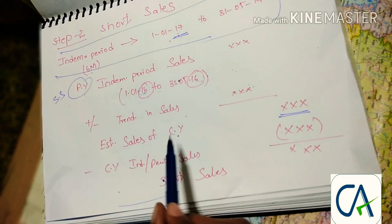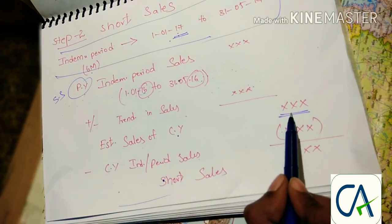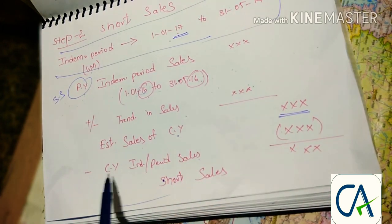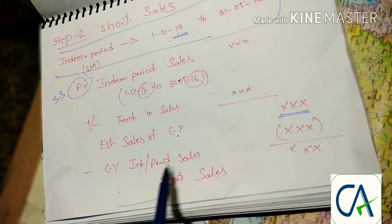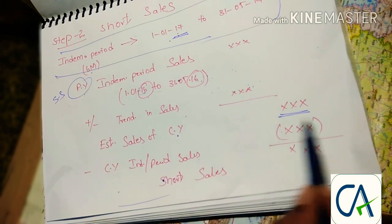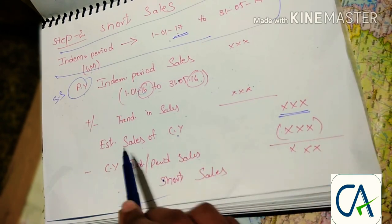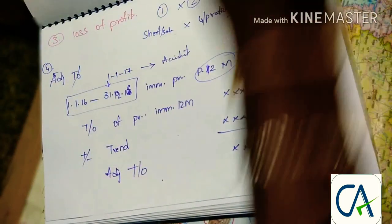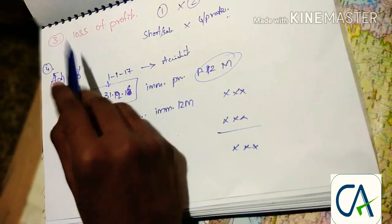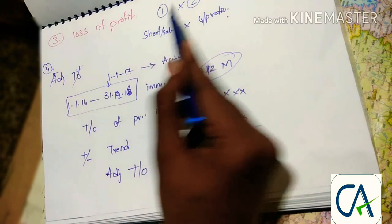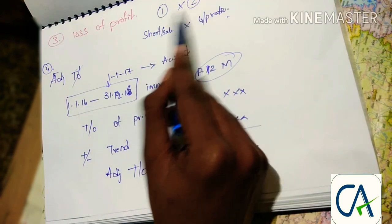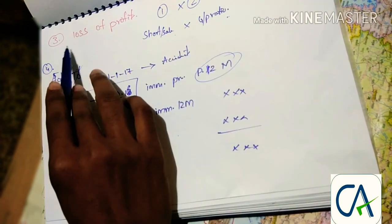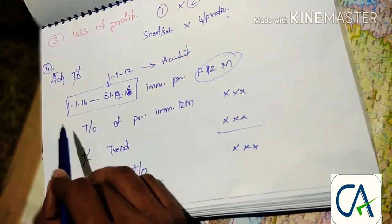After adjusting the sales with the trend, you will get the estimated sales of the current year — that is, what the actual sales would have been if the accident had not happened. Since the accident happened, you take the actual current year indemnity period sales given in the question and reduce it from the estimated sales, giving you the short sales. That completes step two. Step three is simply short sales multiplied by the gross profit ratio, which gives the loss of profit.